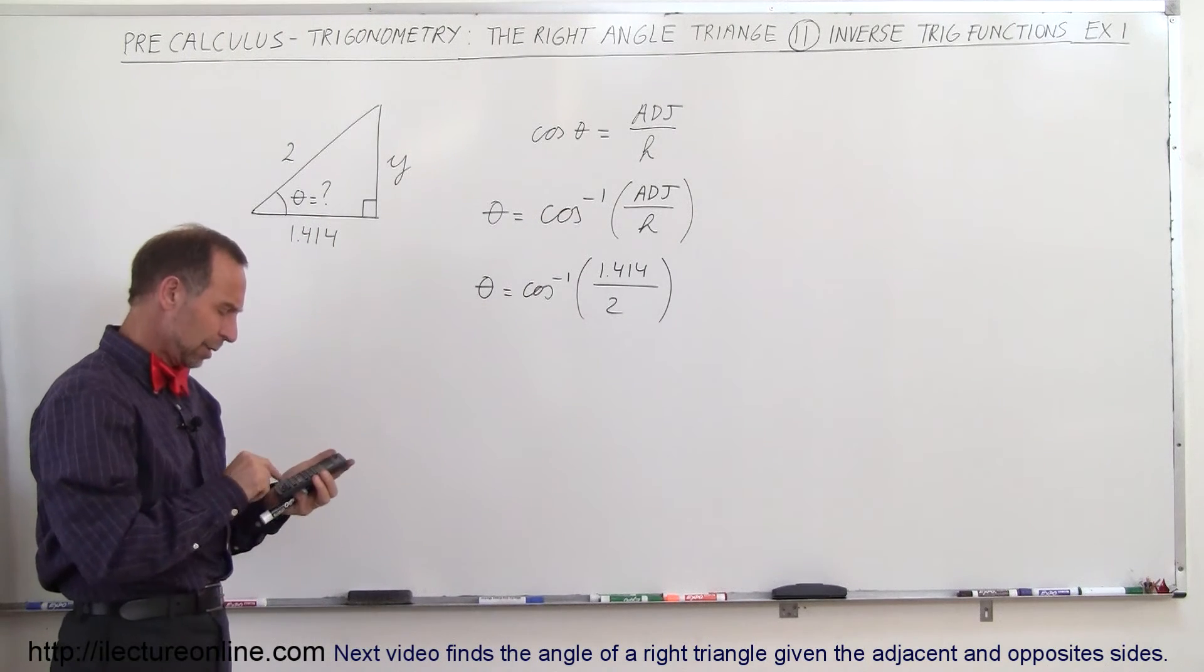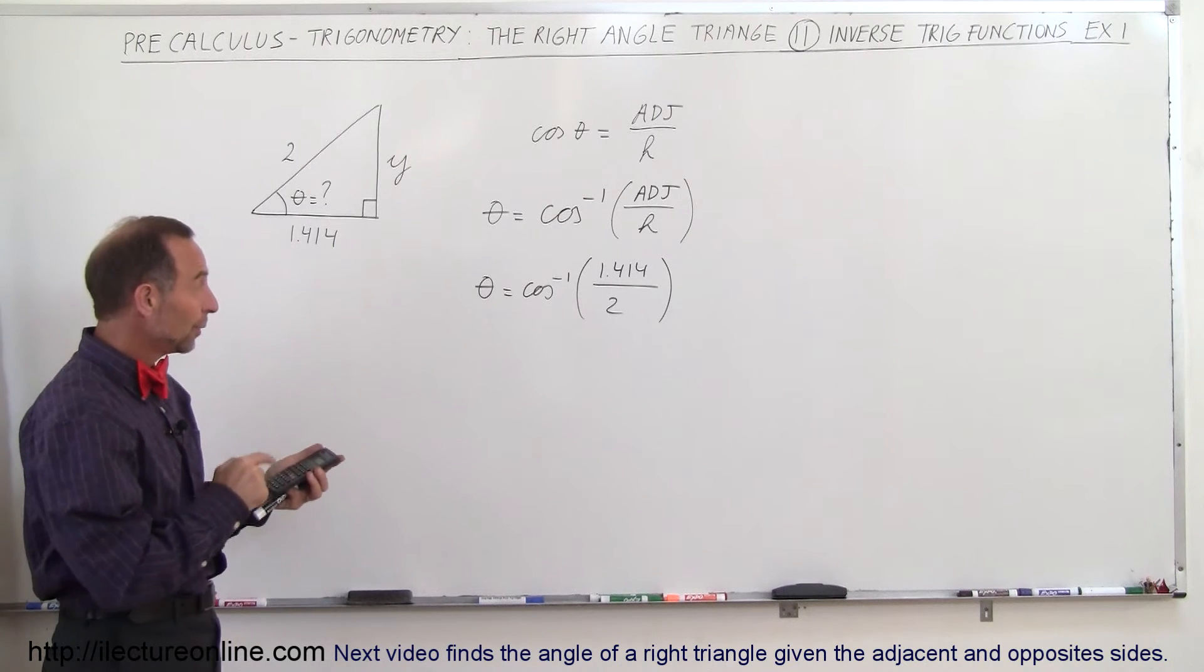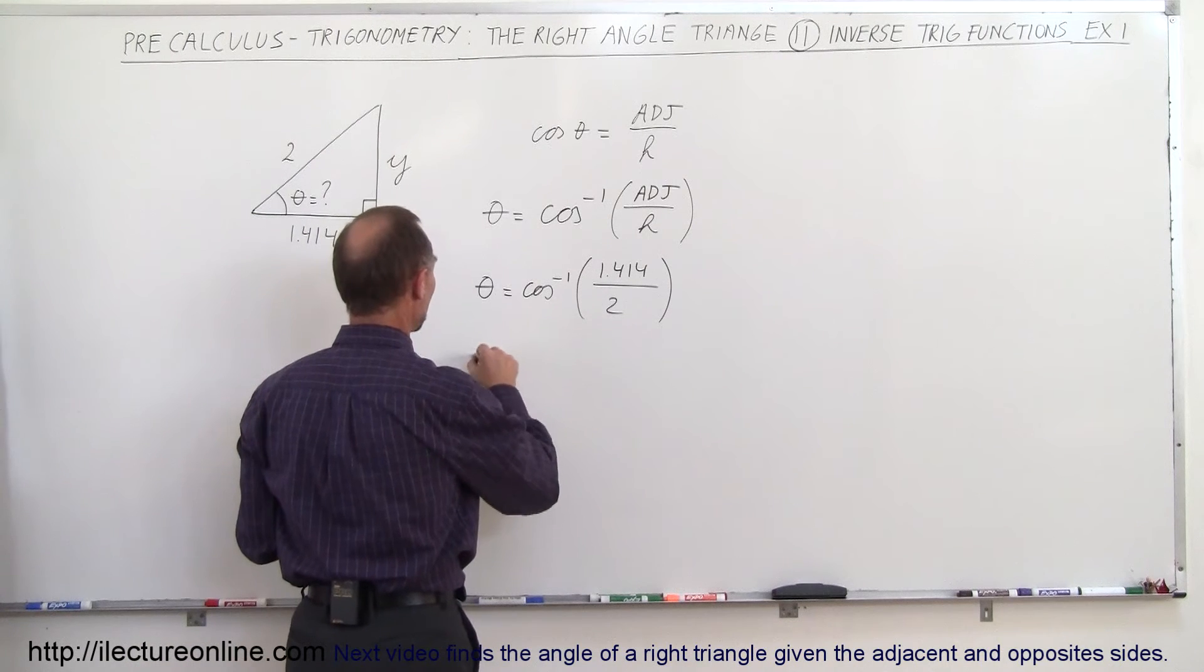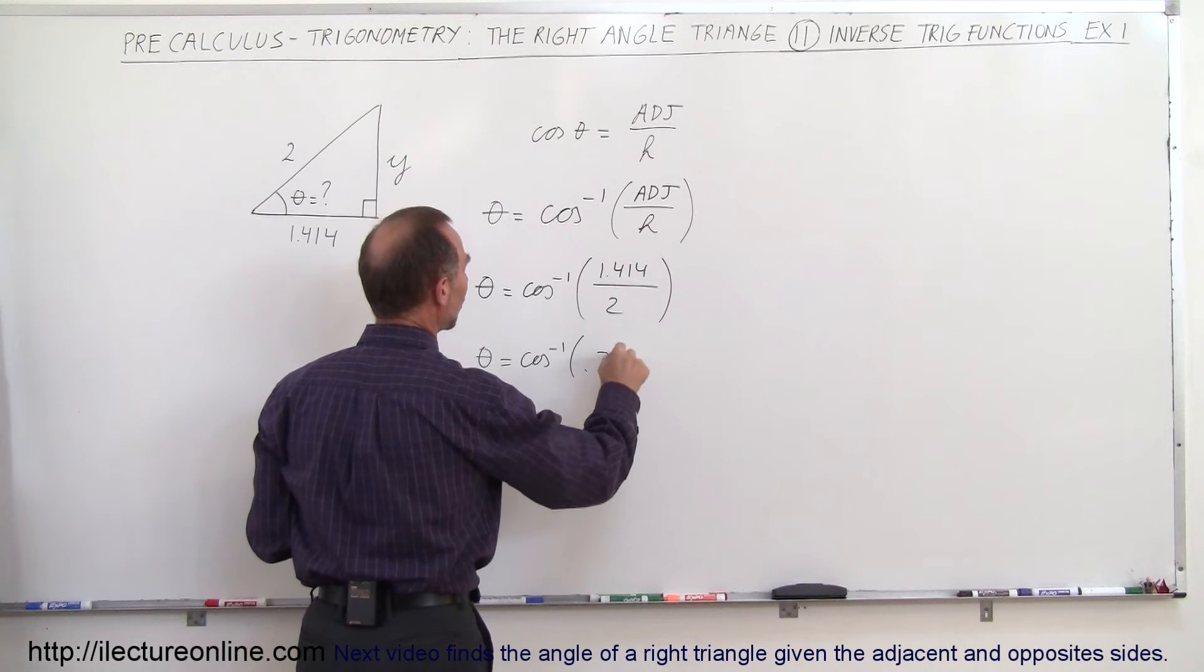And we take 1.414 divided by 2, we then take the arc cosine and actually, you know what, if you were to do that and you write down the intermediate value, notice we get 0.707.